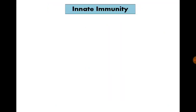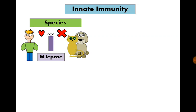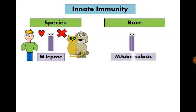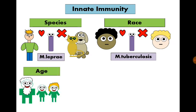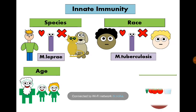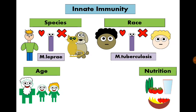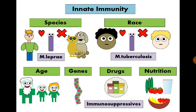Innate immunity can be affected by many factors. Species matters — for example, Mycobacterium leprae can infect only humans. Race also matters — Mycobacterium tuberculosis infects more dark-skinned races. Elderly people and children have weaker immune responses. Healthy food and good nutrition help build powerful immunity. Genetic factors also affect immunity, and certain drugs like immunosuppressants can inhibit immunity.